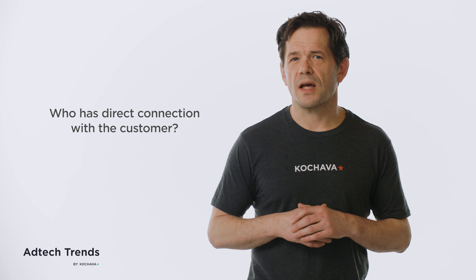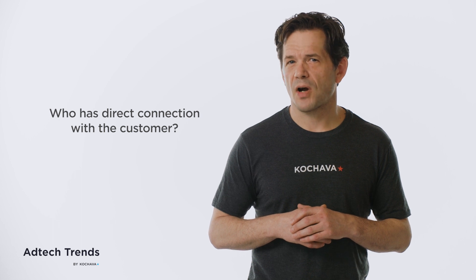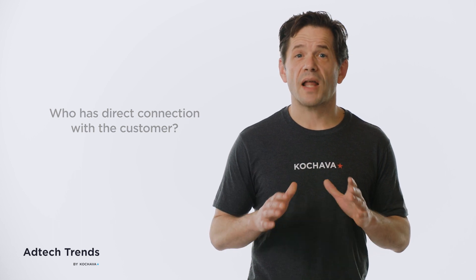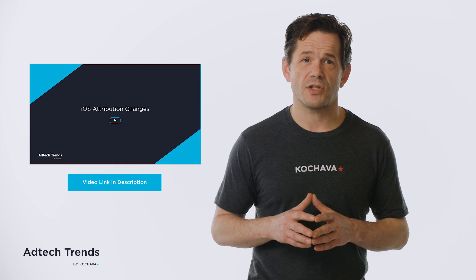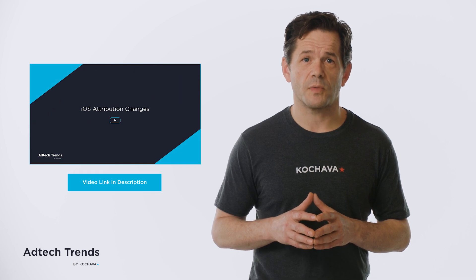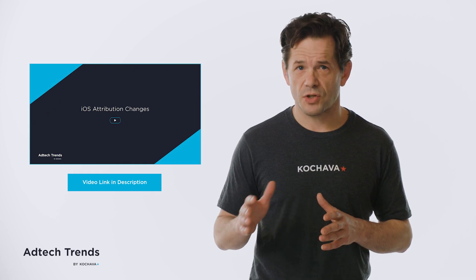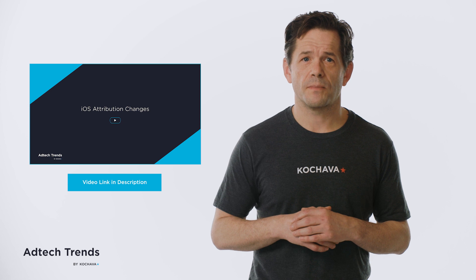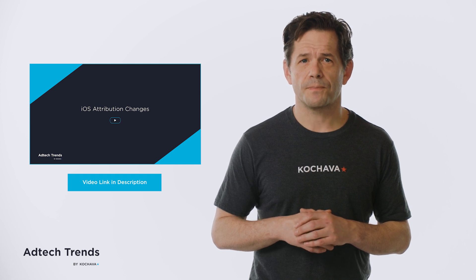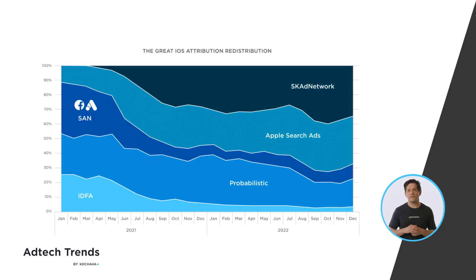Who has direct connection with the customer now? Not brand advertisers. In our last ad tech trends, we looked at the change in attribution sources over the previous couple of years — you can check that in the video on our channel. Here's a review of that chart. You can see the reduction of the IDFA, or deterministic attribution, and attribution to self-attributing networks, or SANs, and the enormous growth of iOS via the SCAD network, and more importantly, Apple Search Ads.